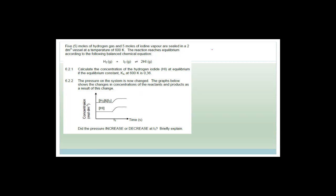So let's just think about this for a minute. We know that Kc is going to be the concentration of hydrogen iodide all squared, all over the concentration of hydrogen multiplied by the concentration of iodine. Because they're all gases, and we know that that is 0.36.